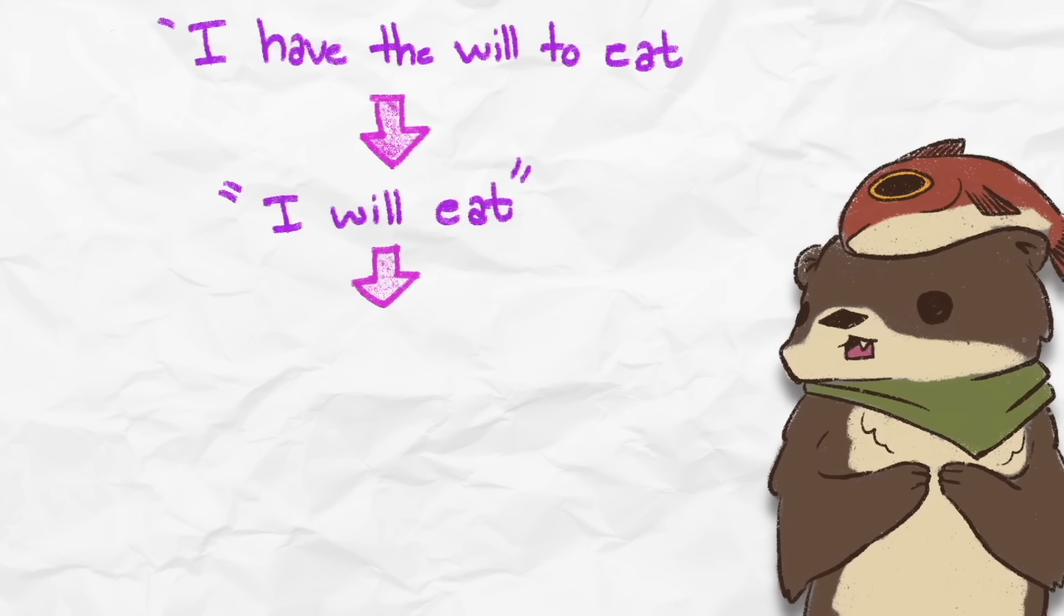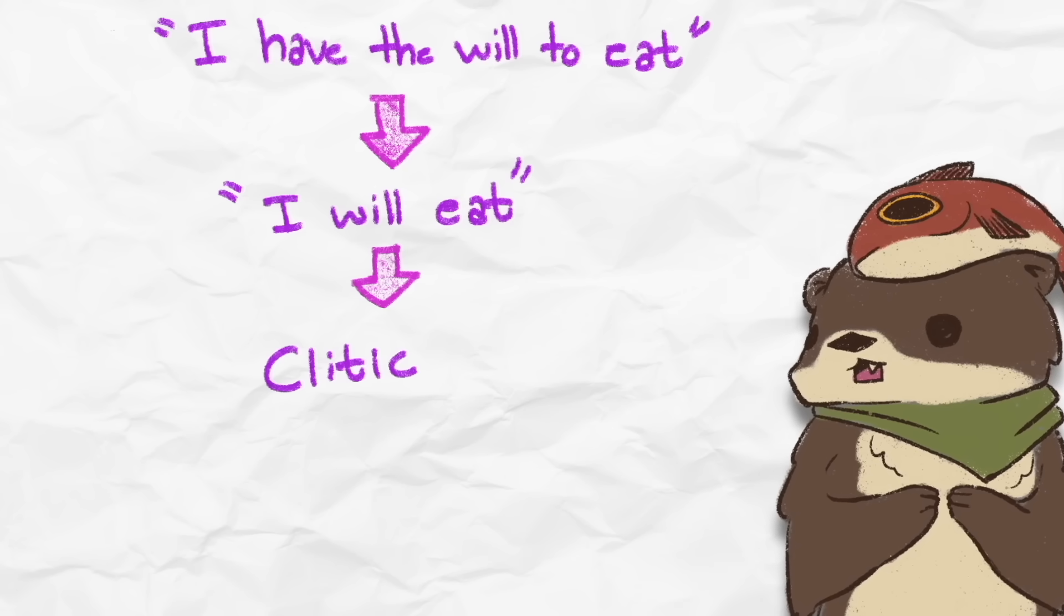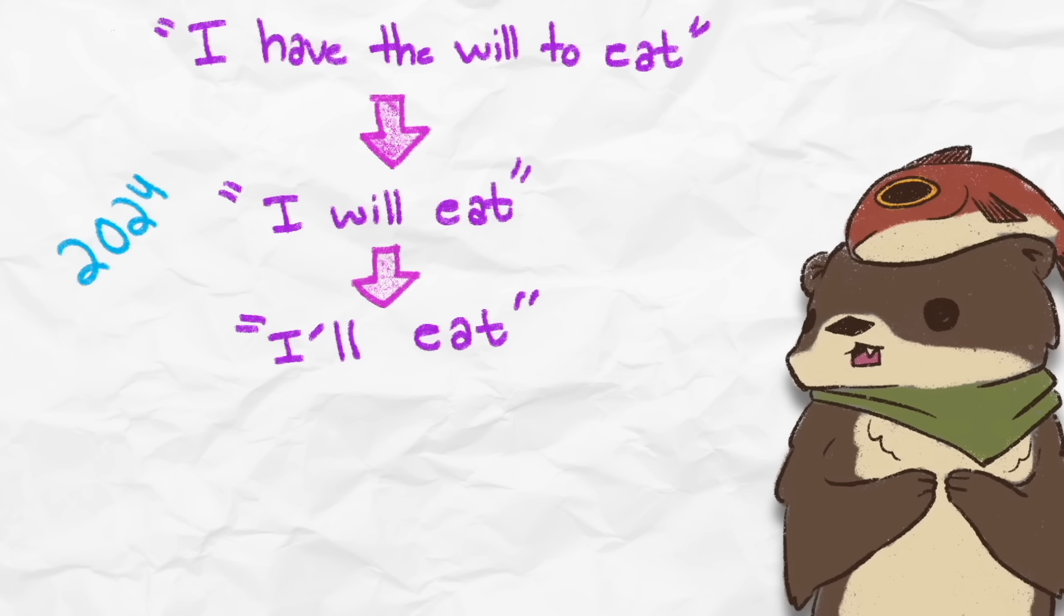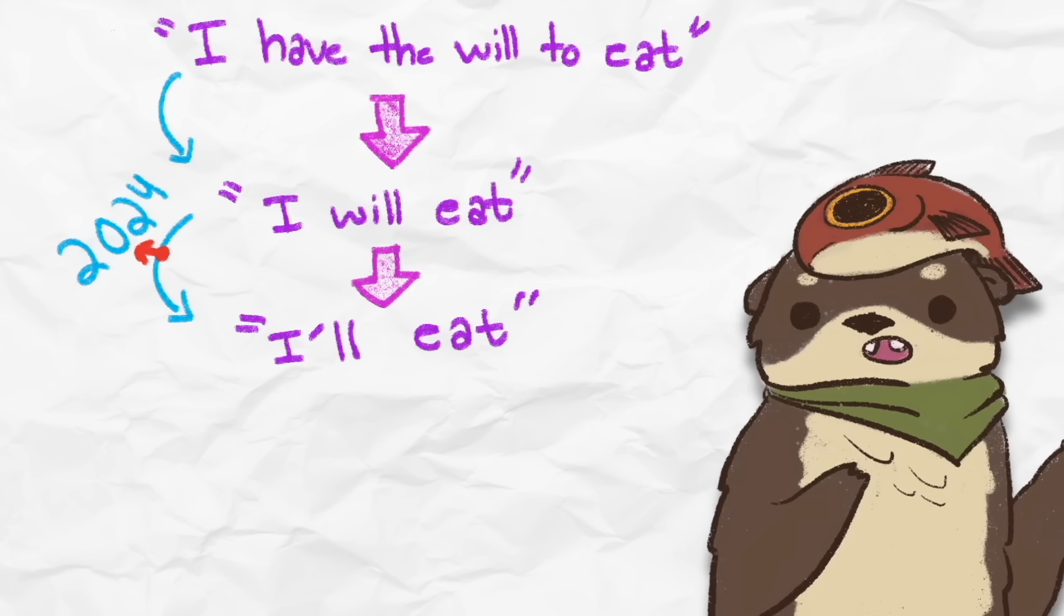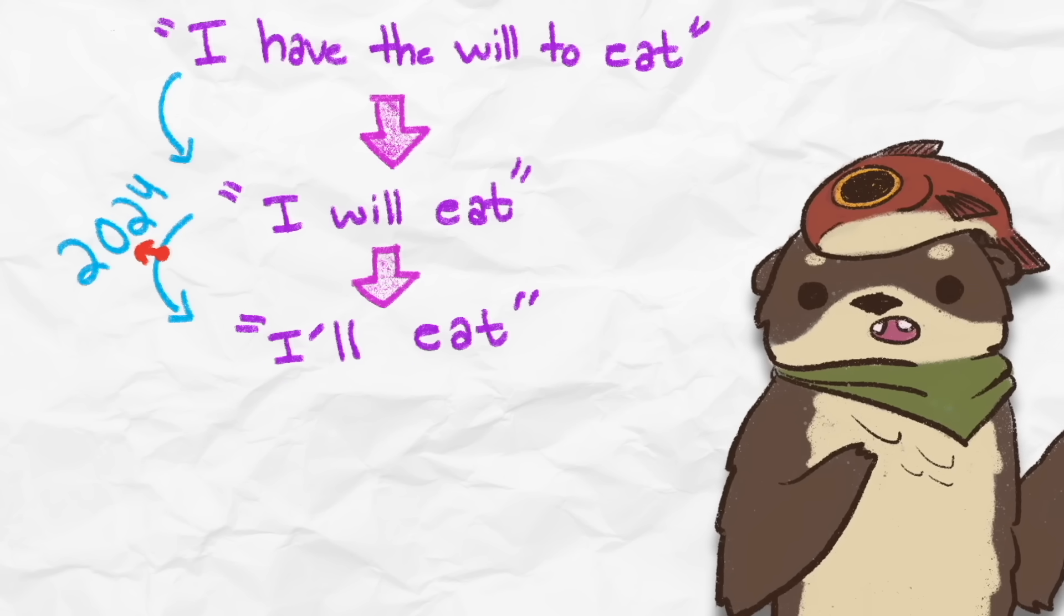According to the decline of grammaticality, the next step after this is becoming a clitic, which is exactly what is happening right now. Will is turning into being attached to the pronouns like I'll, we'll, they'll, you'll.